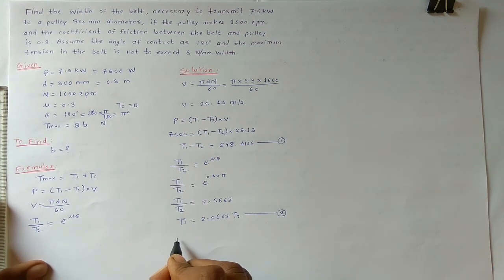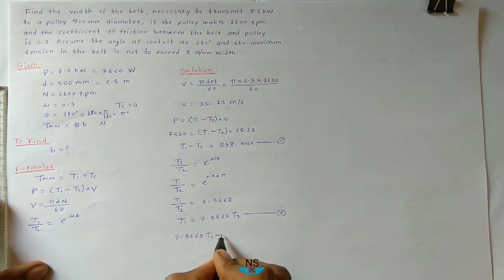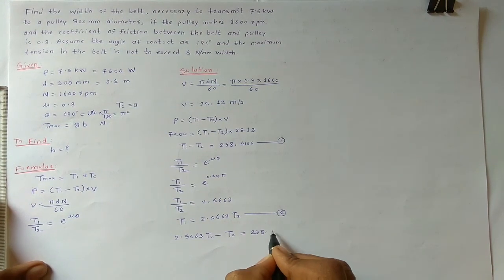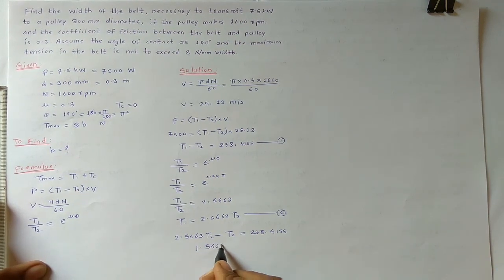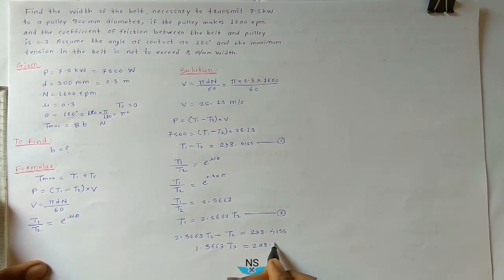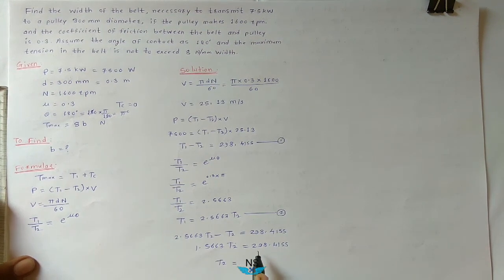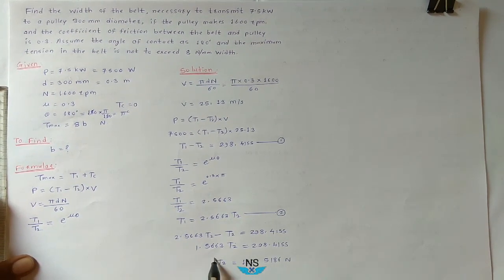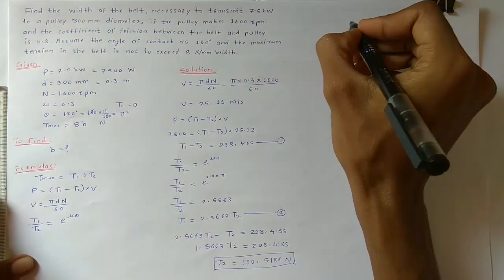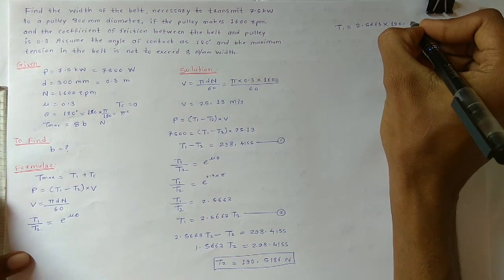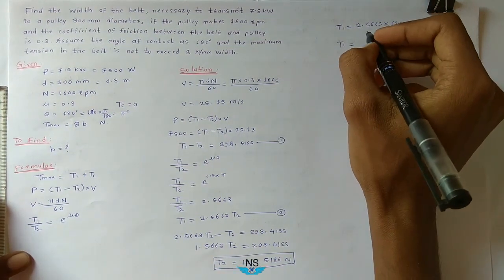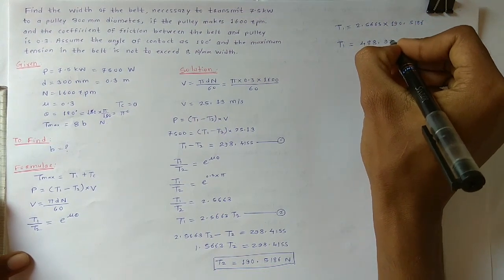Substituting the second equation into the first: 2.5663 T2 minus T2 equals 298.4155. So 1.5663 T2 equals 298.4155. Therefore T2 equals 298.4155 divided by 1.5663, which gives T2 equals 190.5186 N. Putting this value into equation 2, T1 becomes 488.9279 N.